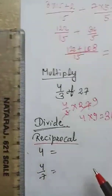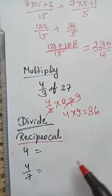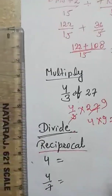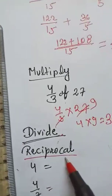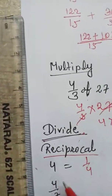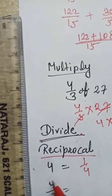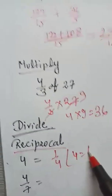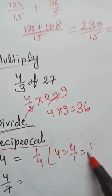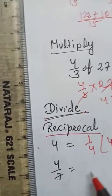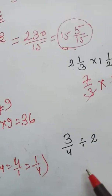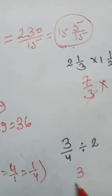Before division, you need to know reciprocals. The reciprocal is always the opposite. So the reciprocal of 4 is 1 upon 4, because 4 is 4 upon 1, so just flip it. For example, the reciprocal of 4 upon 7 is 7 upon 4. Once you know reciprocals, you can easily solve division.